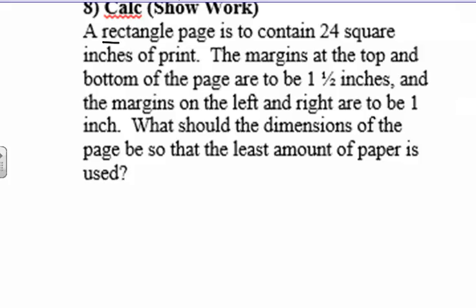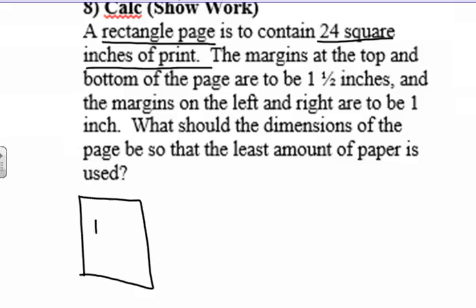What we have is a rectangle page that contains 24 square inches of print. You see this in textbooks. What we have is this rectangular page, and inside we have 24 square inches of print. Now, the margins at the top and bottom of the page are one and a half inches. So we'll put 1.5 inches here. And then we have margins on the left and right that are going to be 1 inch.